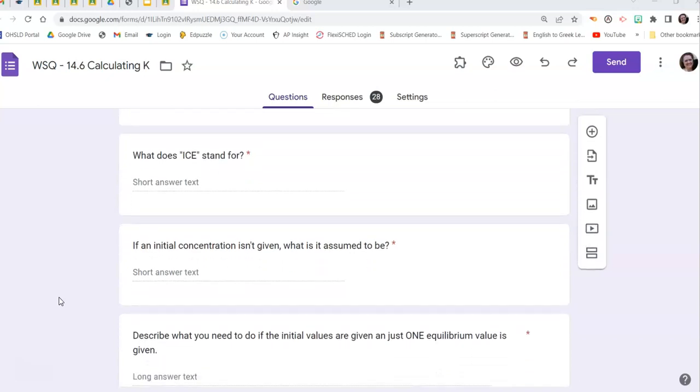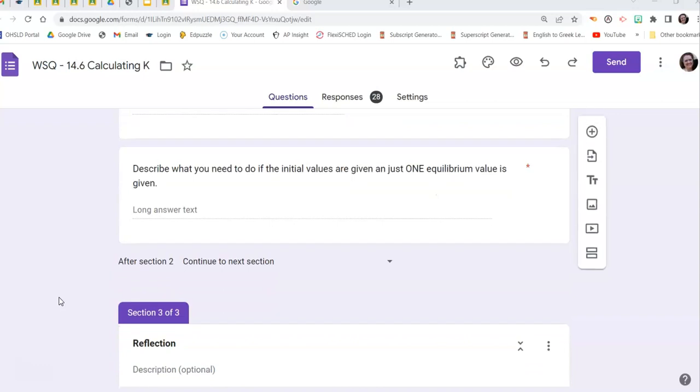So what does ICE stand for? Initial change equilibrium. Very similar to BCA. B is beginning, initial change again, but A means after when the reaction is completed. E is not that. E is at equilibrium when the forward and the reverse reactions equal out. If the initial reaction is given, what does it assume to be? Zero. Describe what you need to do if the initial values are given just one equilibrium value is given. Well, that's where you use the ICE table. That's where you use the same procedures you would with the BCA.